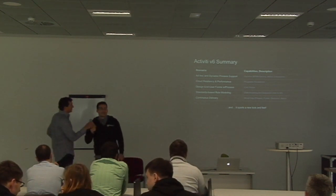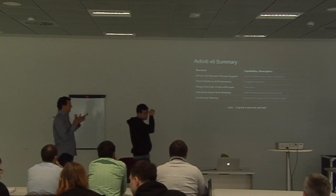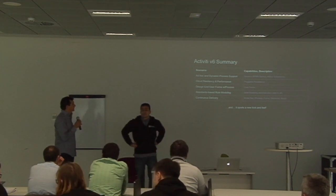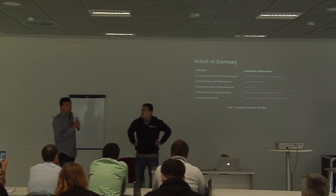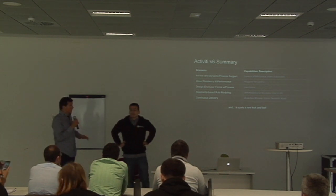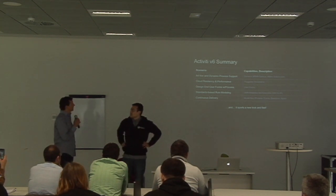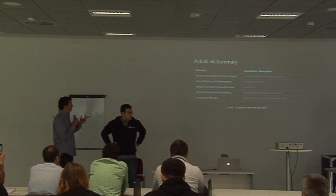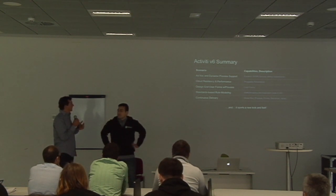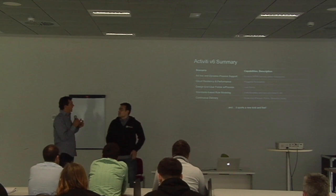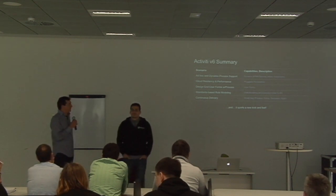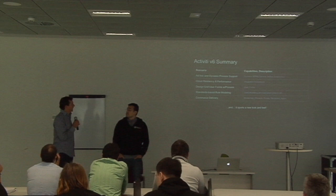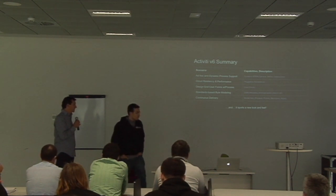The summary is really just a recap of what we talked about: dynamic process support — we saw a demo of that; cloud resiliency and pluggable persistence, which we've talked about for a while; we did forms demos; and standard-based rule modeling. Those are the main marquee features. The next slide is the drum roll slide.